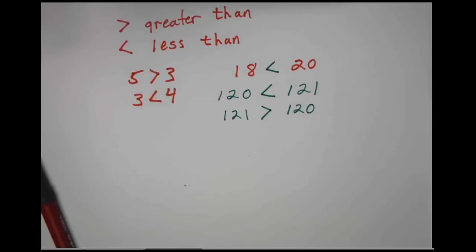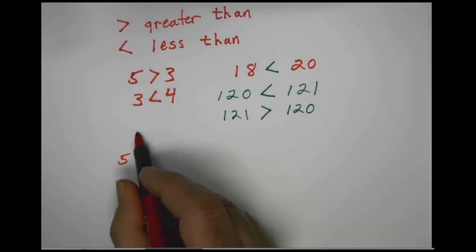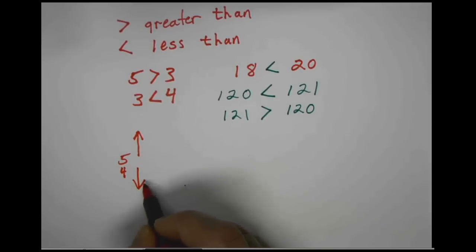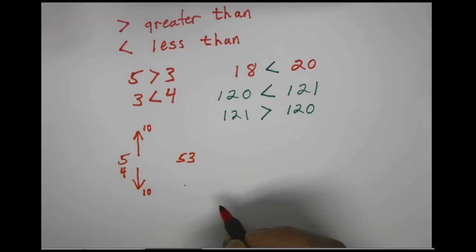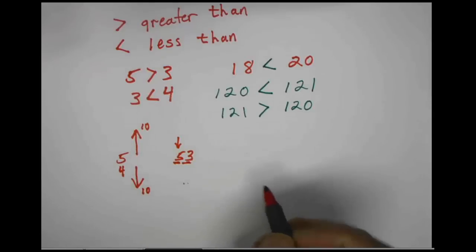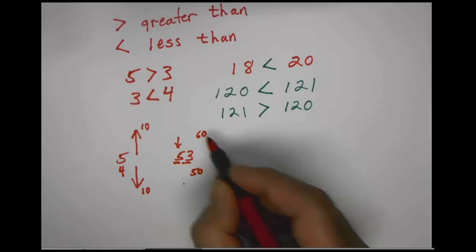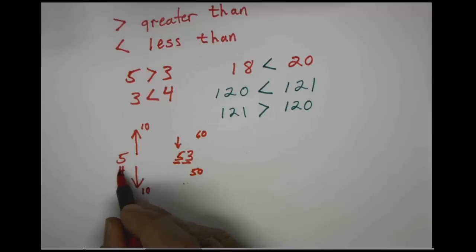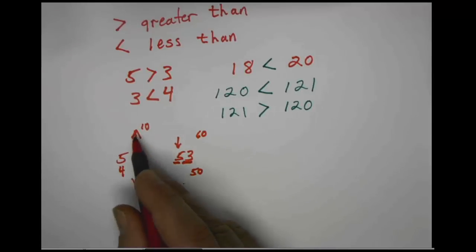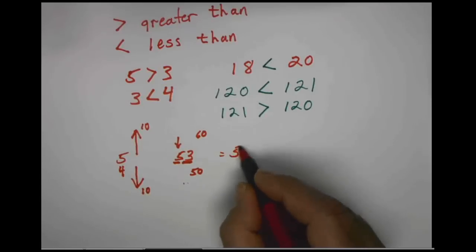Objective number three: round a given whole number. First, let's talk about some rounding rules. If a number is 5 or greater, we're going to round up. If it's 4 or less, we're going to round down, to the nearest 10 — the 10 above and the 10 below. So if we had the number 53, rounding to the nearest 10, we compare 53. Is it closest to the 10 below, which is 50, or the 10 above, which is 60? The 3 is 4 or less, so we round down. 53 to the nearest 10 rounds to 50.